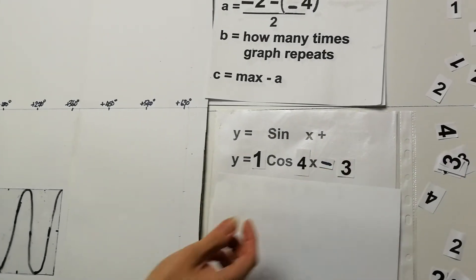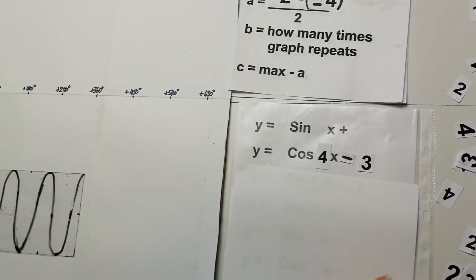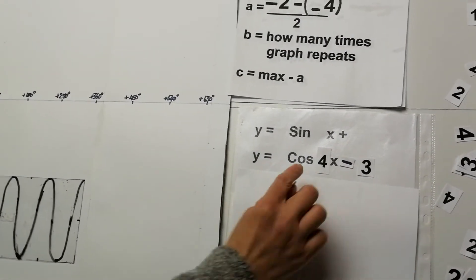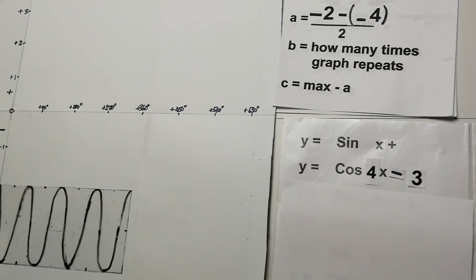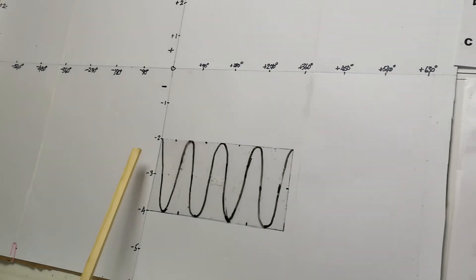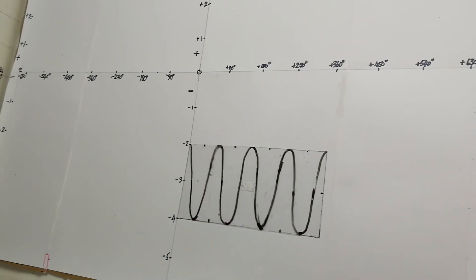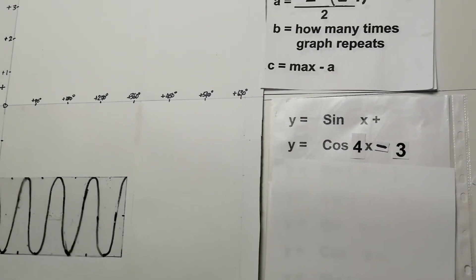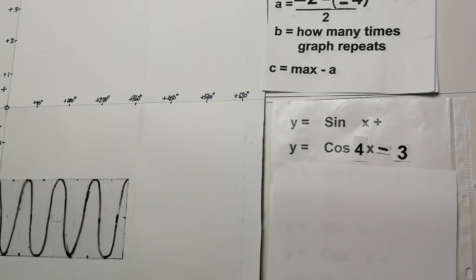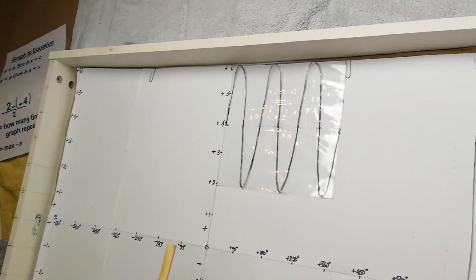We don't need to write the coefficient of 1 explicitly. The equation is y = cos(4x) − 3. It's essentially a regular cosine graph that repeats four times and has been shifted down by 3.